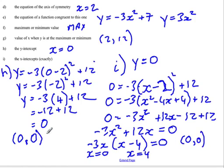So then our x-intercepts are going to be (0, 0), which we expected from the beginning of the question, and (4, 0).